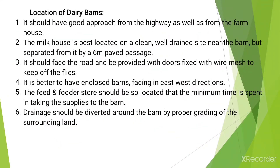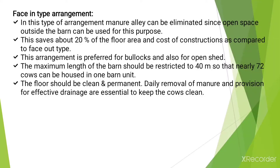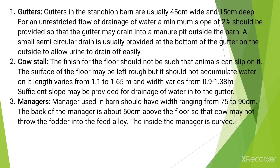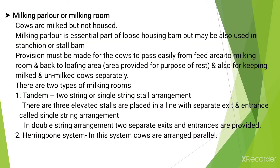We are going to learn about different types of dairy barn. There are three basic types: first, the stanchion barn, which has two sub-types — face out and face in. Then the loose housing barn, and after that the open dairy barn.